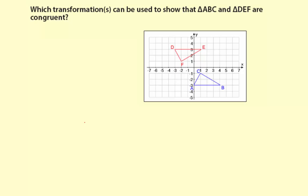Which transformations can be used to show that triangle ABC and triangle DEF are congruent? So let's compare.